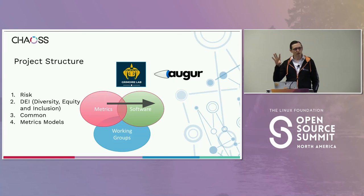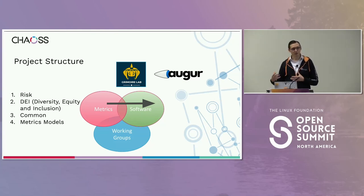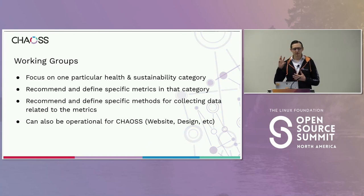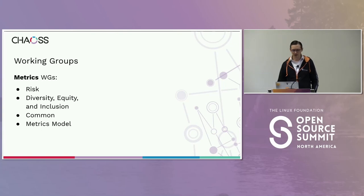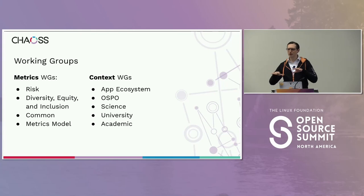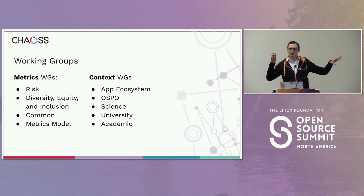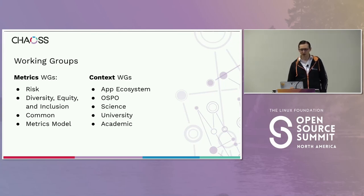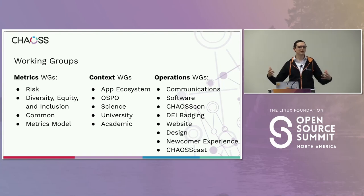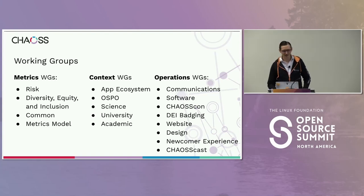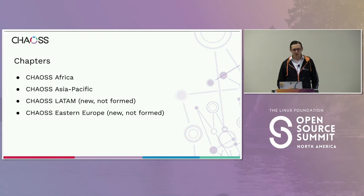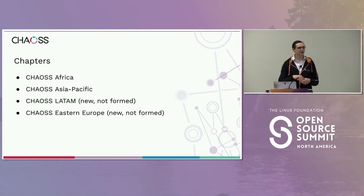We built out metrics around risk, diversity, equity, and inclusion. There are common metrics, and we've built out metric models. The work is done in working groups focusing on particular metric categories. There are context working groups — this is where metric models are created, putting metrics together for specific use cases. There's also supporting work: maintaining the website, hosting a podcast, running events. We have an active and growing global community in Asia, Africa, North America, and Europe.